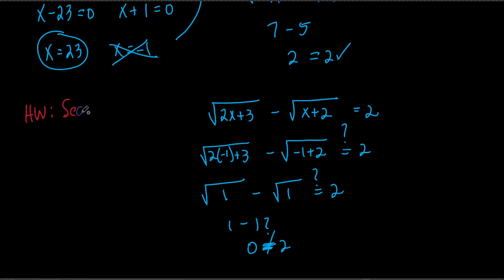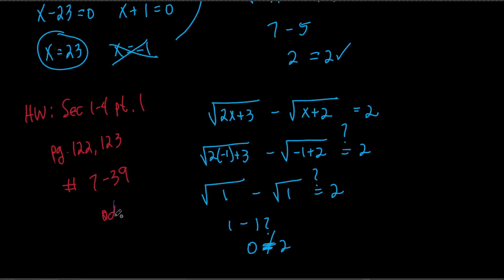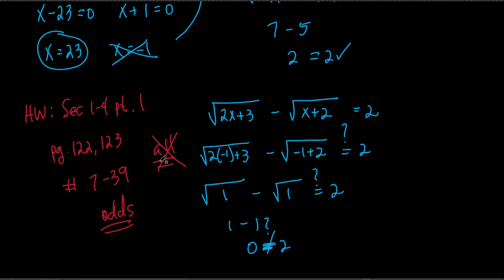That was pretty long, but none of the steps were all that difficult. So, your homework is section 1-4, part 1, pages 122 and 123, numbers 7 to 39 — you're only doing the odds. For those in class on Monday, I handed out a lesson plan sheet. Also, for parts 2 and 3, even though the sheet says 'all,' we're only going to do the odds. All right, I hope that helps — we'll see you tomorrow.